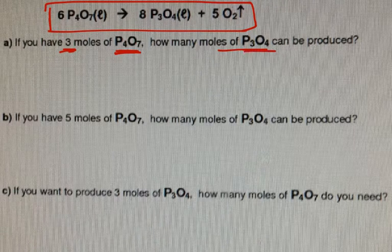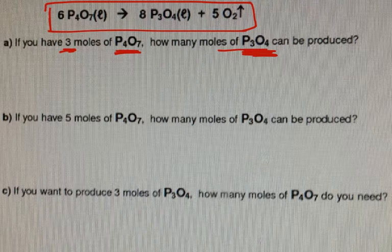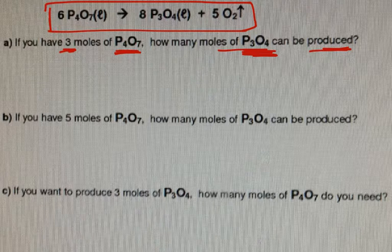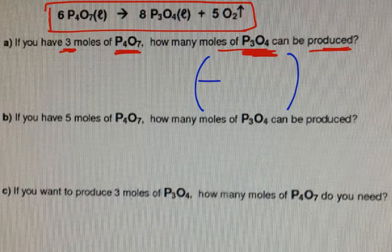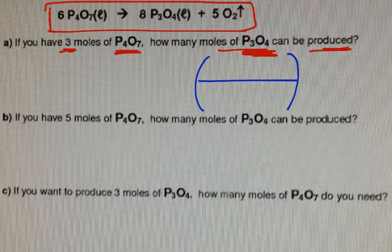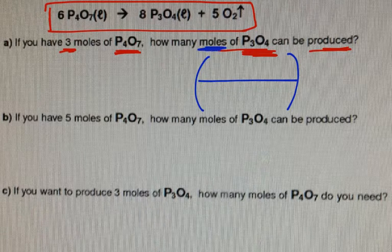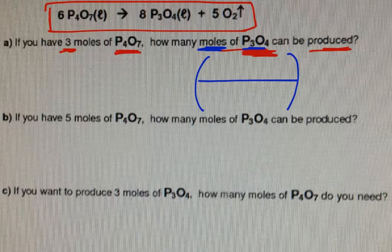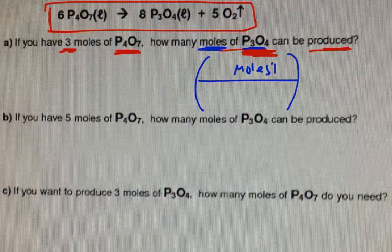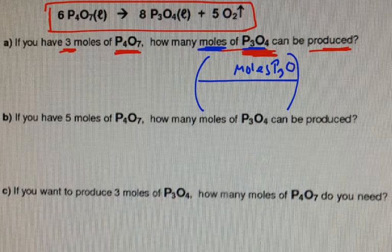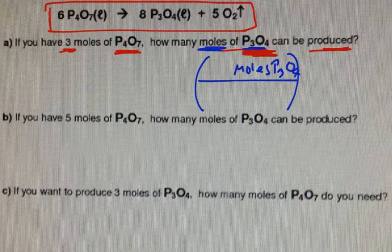If it doesn't have coefficients in front, you should just check and make sure that your equation is balanced. So they gave you three moles of P₄O₇, tetraphosphorus heptoxide, and they're asking you how many moles of P₃O₄ can be produced or made. So what you simply do is you'll set up a conversion factor as before, and you have your separation line for your numerator and denominator. So what are we looking for? We are looking for moles of P₃O₄. You put that in the top. So you put moles P₃O₄ in the top.